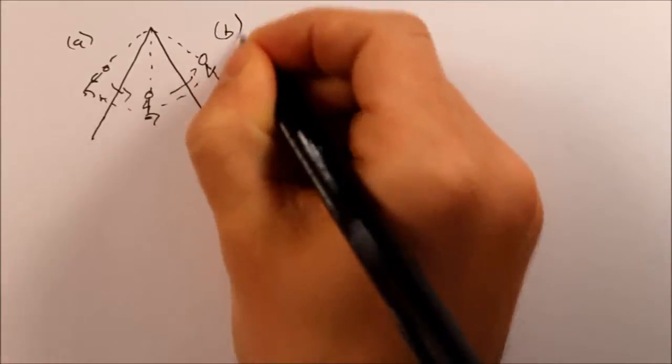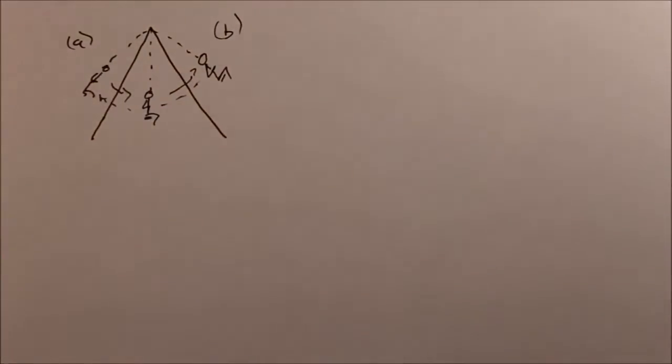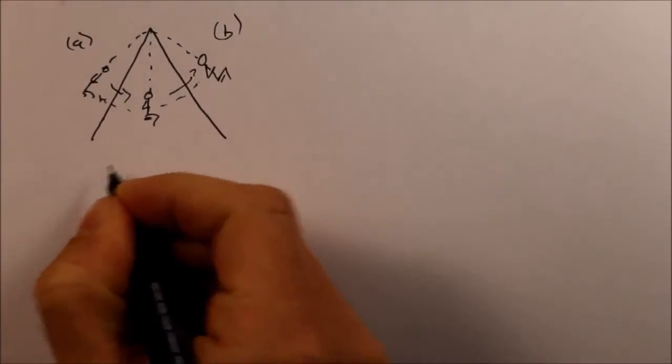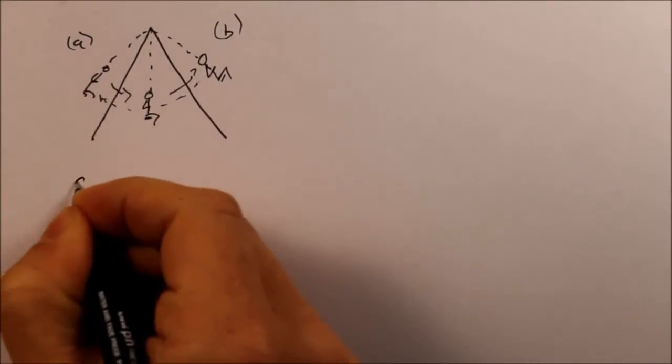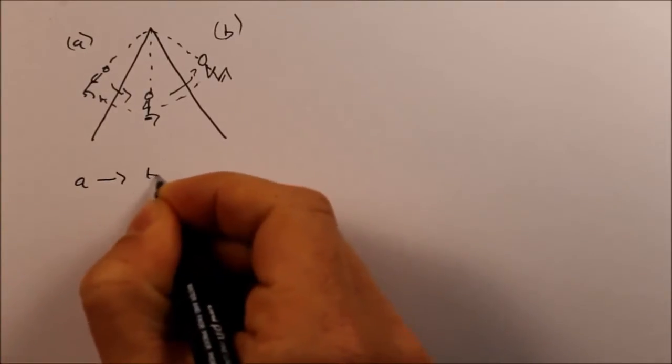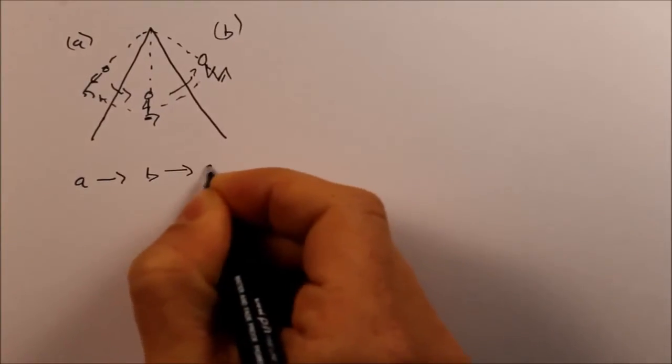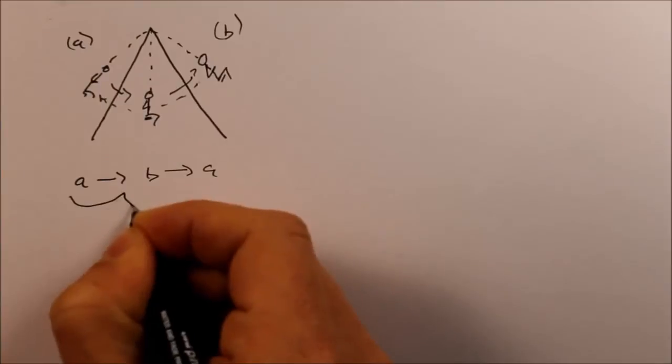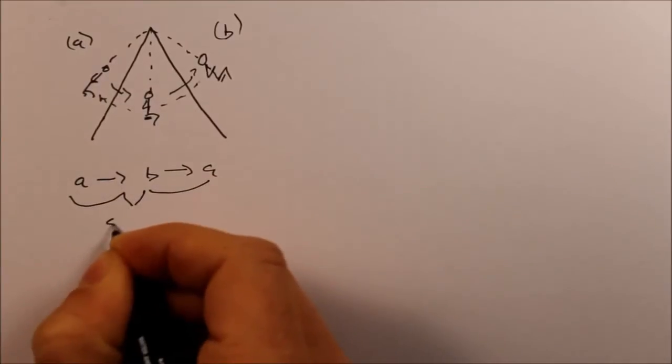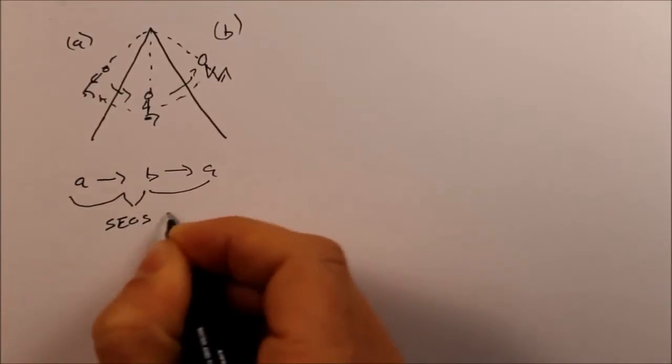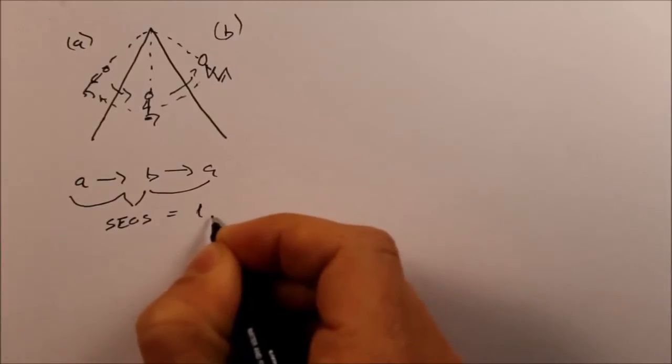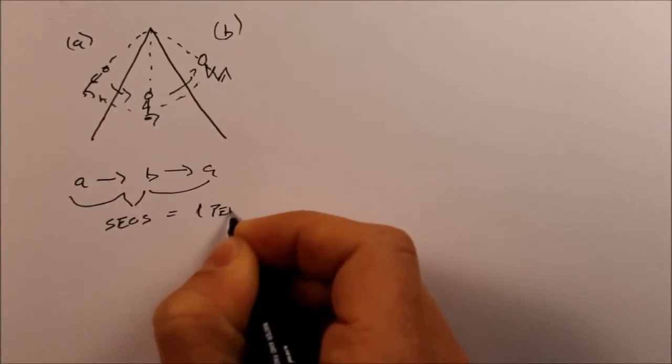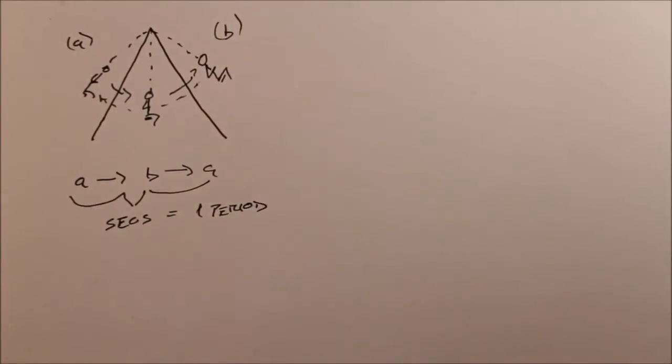So we call the point at the very top point B. All a period is, is the time for one cycle to go from A to B and back to A. And it's that time in seconds. And that equals one period. That's one period of vibration.